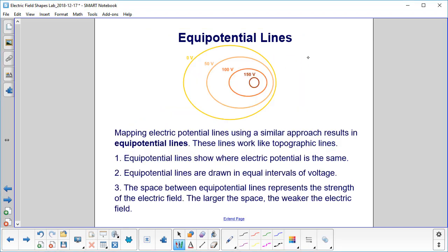So we will now map electric potential lines using a similar approach to what we did with the topographic lines. We call lines of the same potential equipotential lines, equal potential.